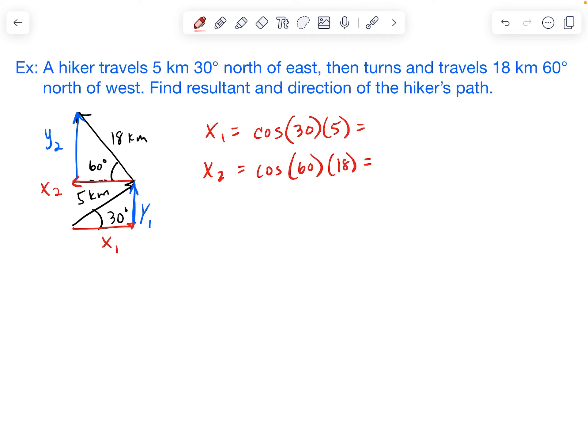Now, make sure that your calculator is in degrees mode and not radians mode, or else you're going to get some different answers here. So we have 4.3 for x1. And for x2, we have cosine of 60 times 18 gives me 9.